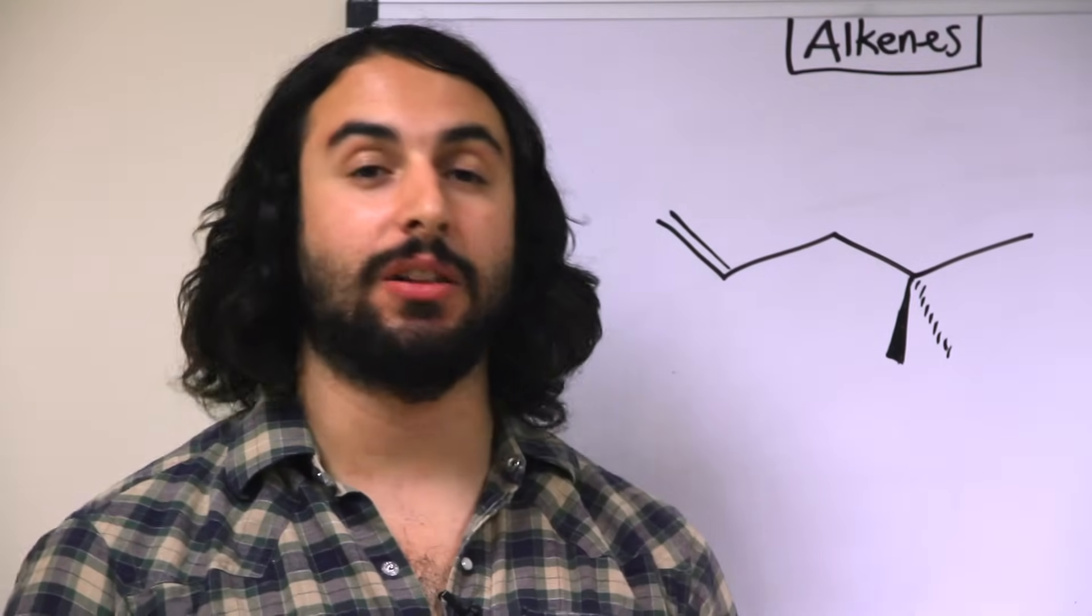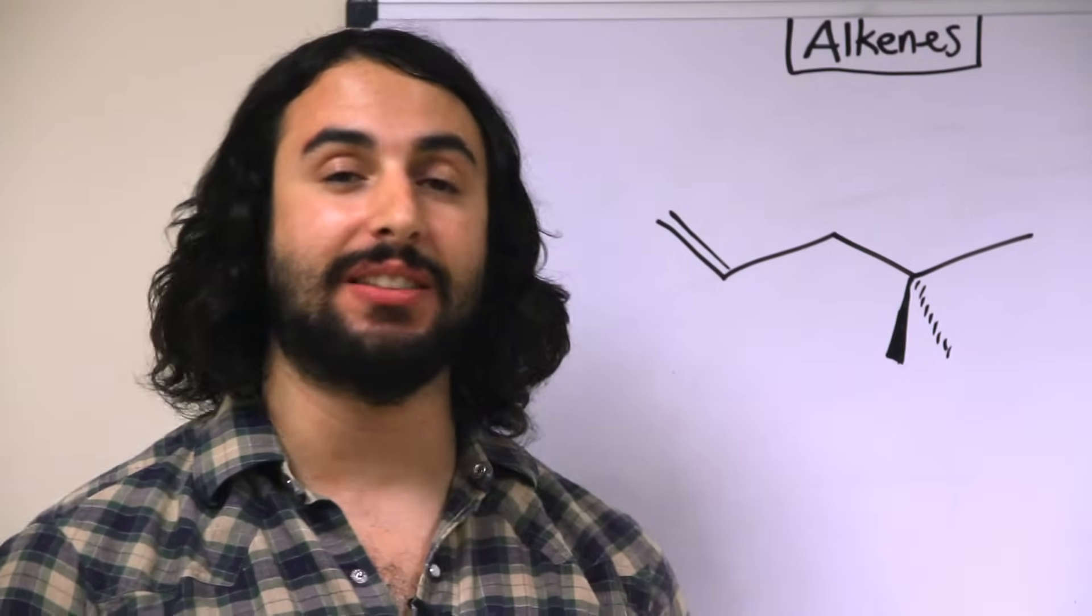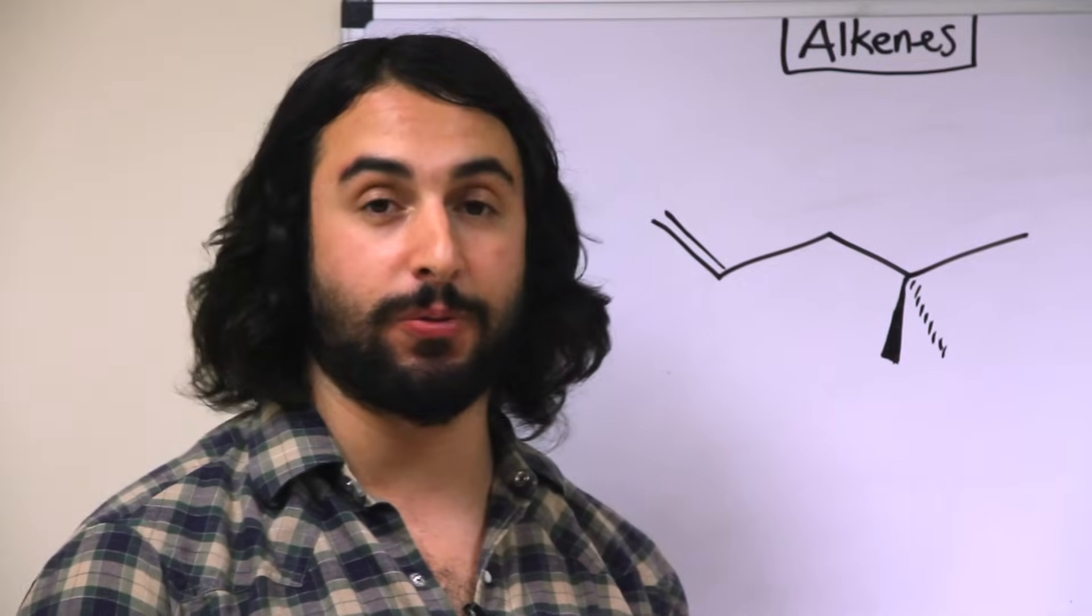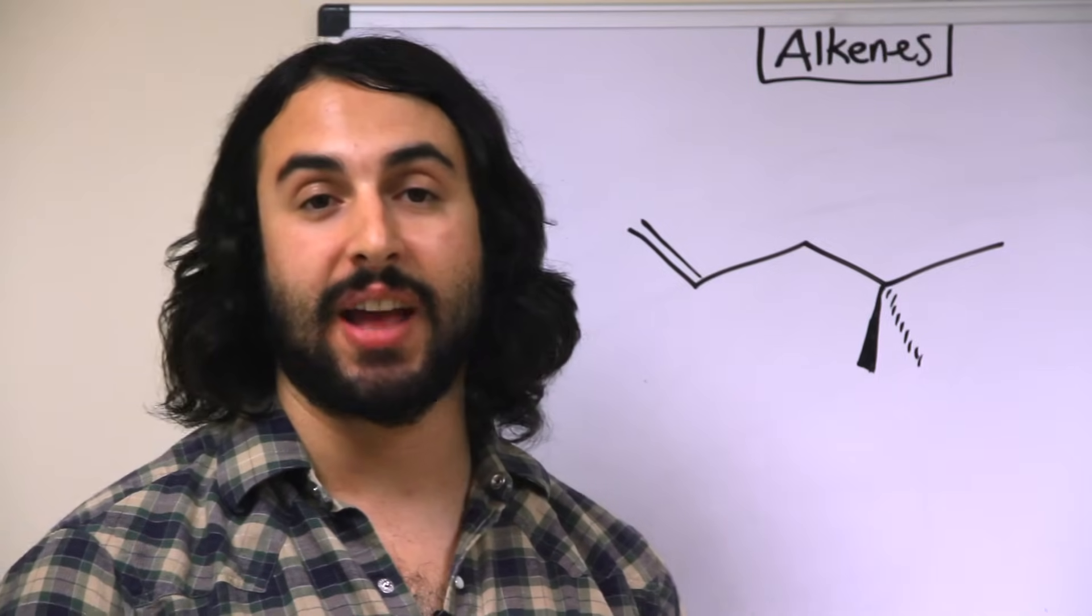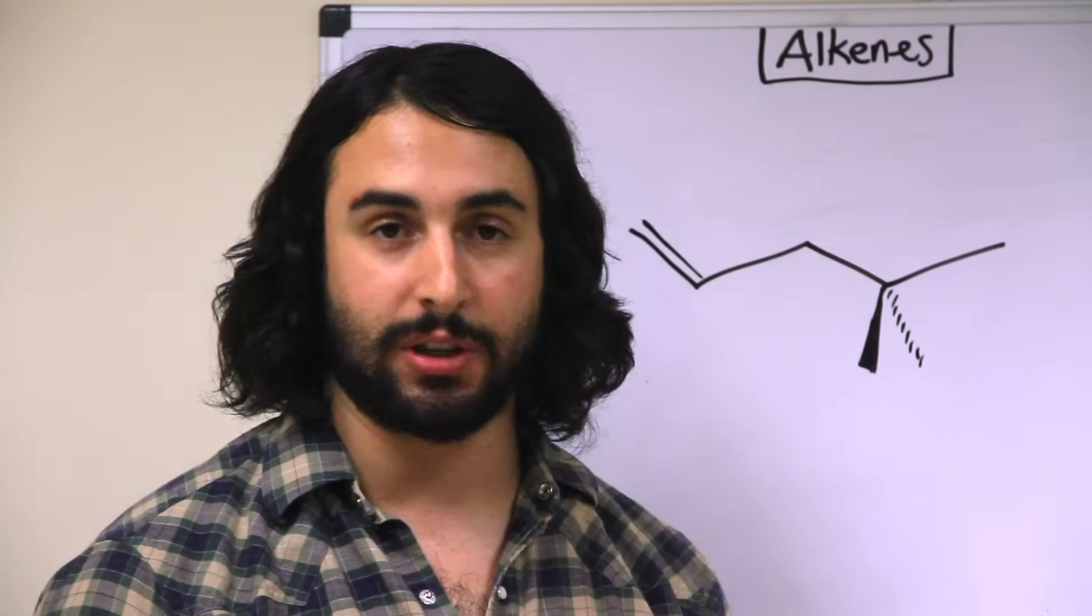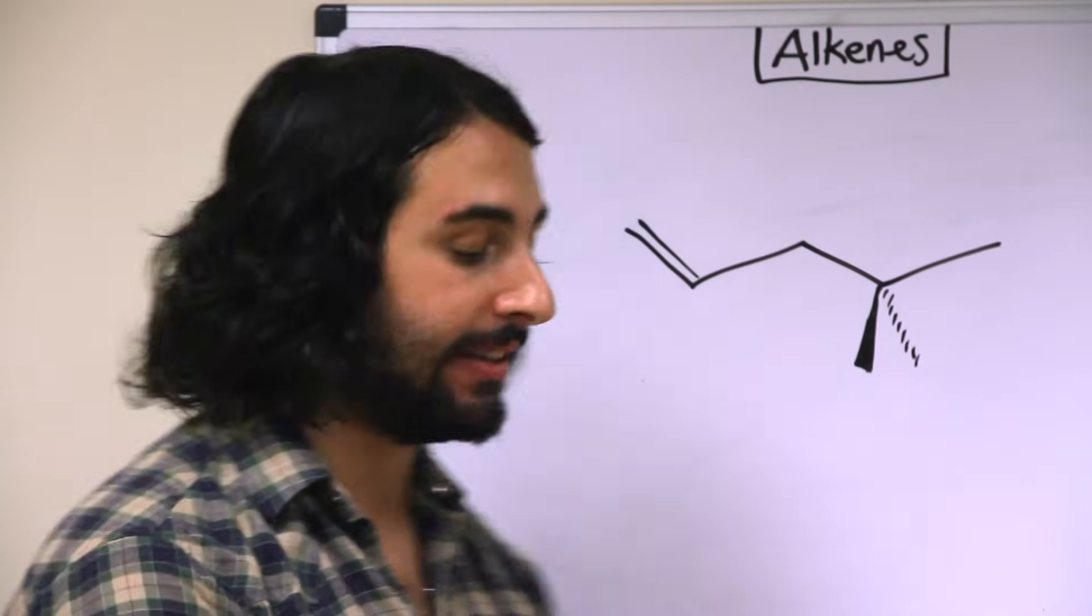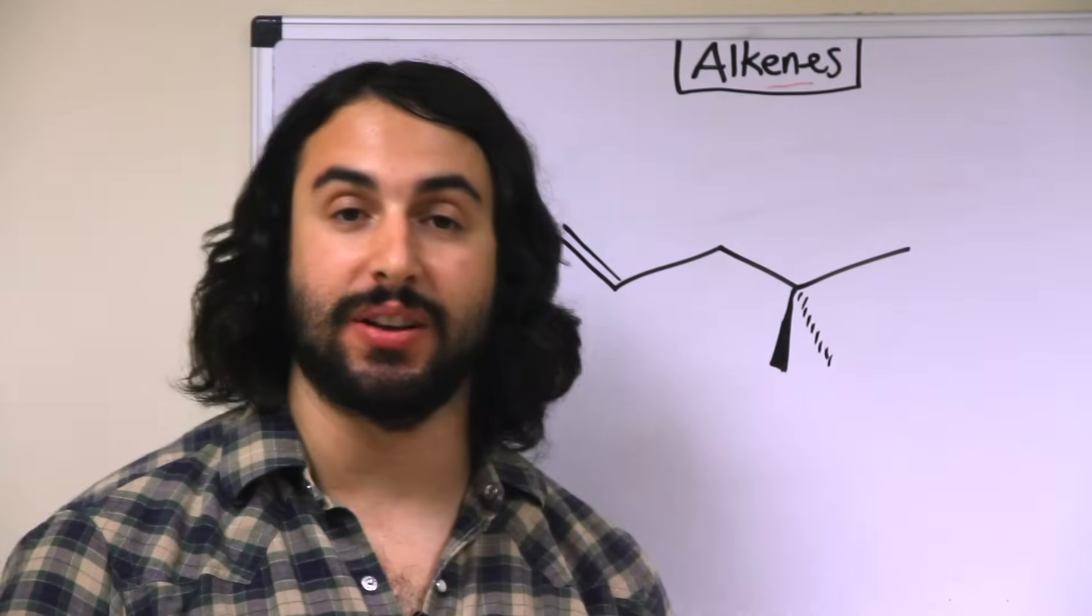So alkenes, like alkanes, are hydrocarbons, however alkenes are molecules that have at least one double bond present. Now just like alcohols as we saw before, having a double bond present in the molecule sufficiently changes the reactivity of the molecule, that we need to change the parent name of the molecule. So an alkene will bear the suffix "-ene", to let us know that there is a double bond present in the molecule.